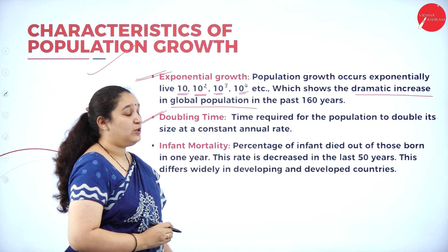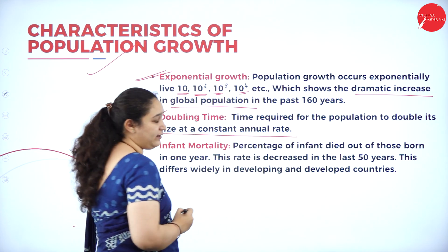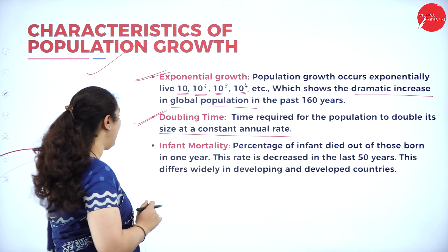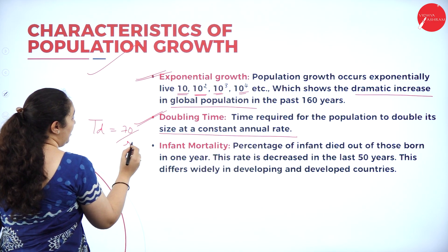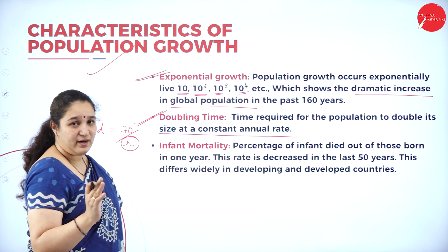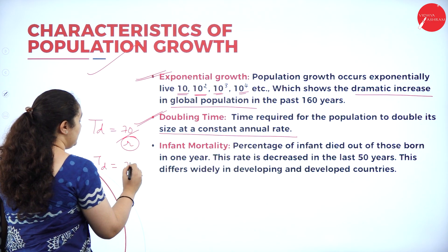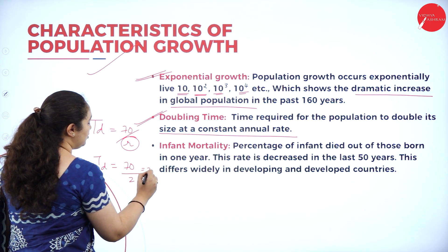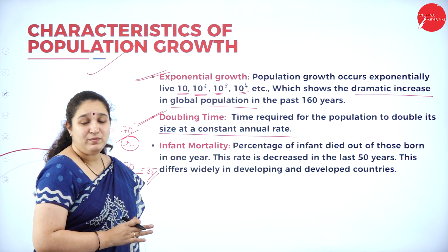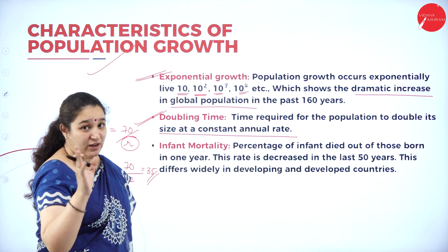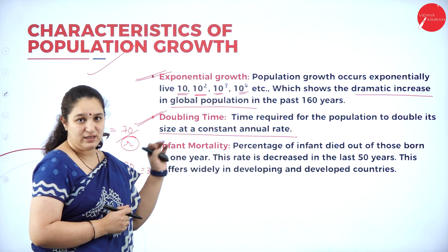Next is doubling time. The time required for a population to double its size at a constant annual rate is called doubling time. This can be calculated using the formula: TD = 70 / R, where R is the annual growth rate. For example, if the annual growth rate is 2, then TD = 70 / 2, so the doubling time will be 35 years.